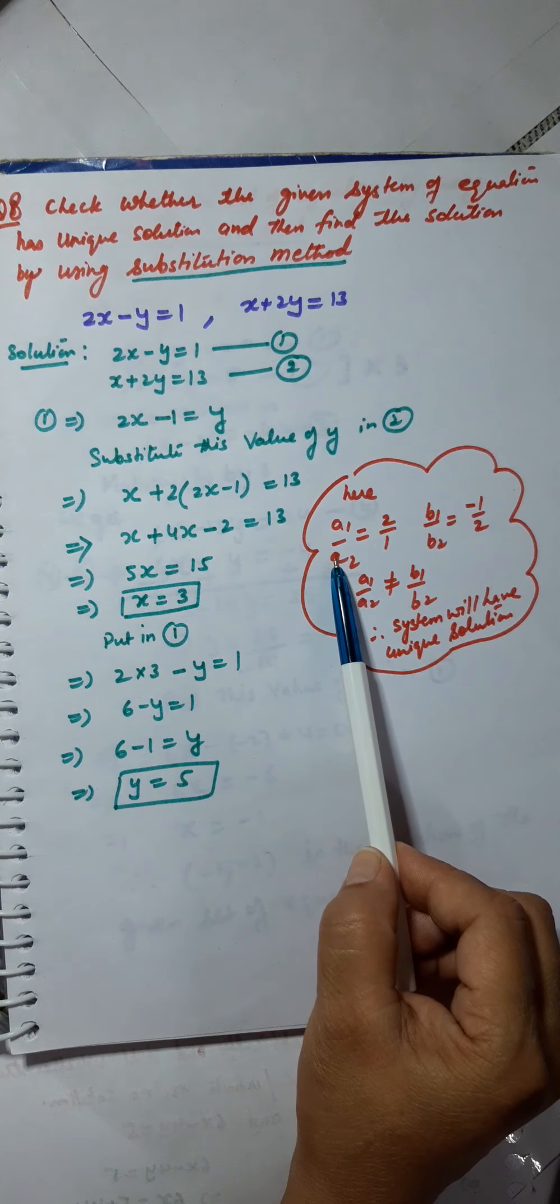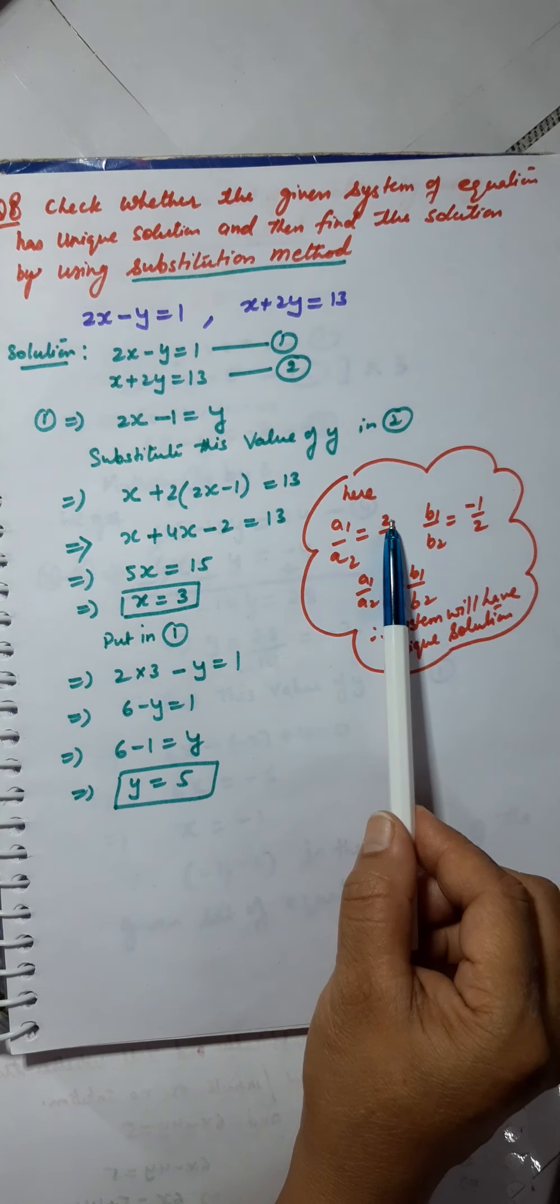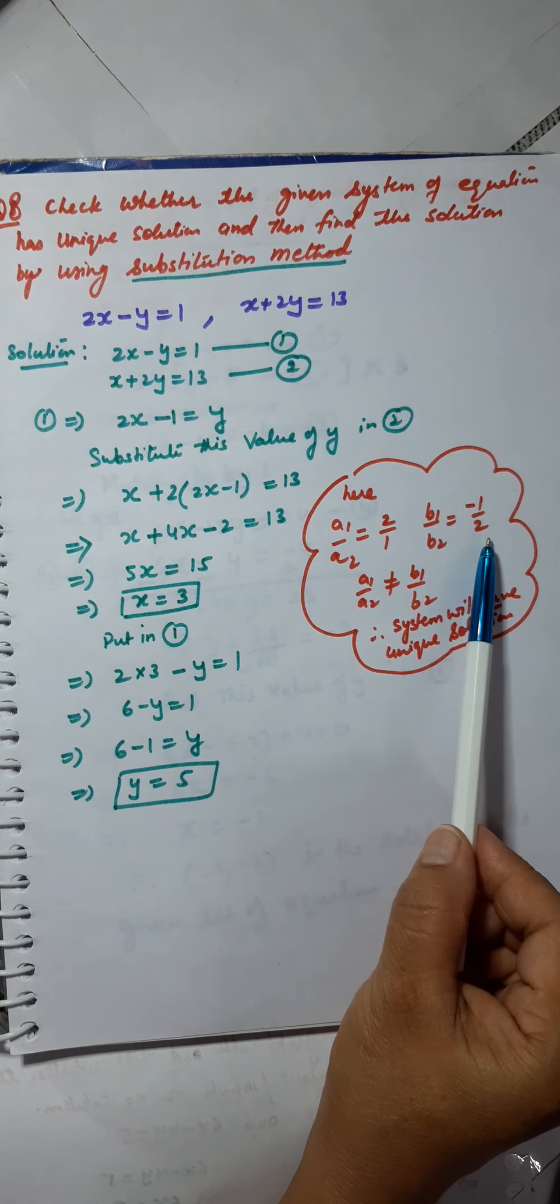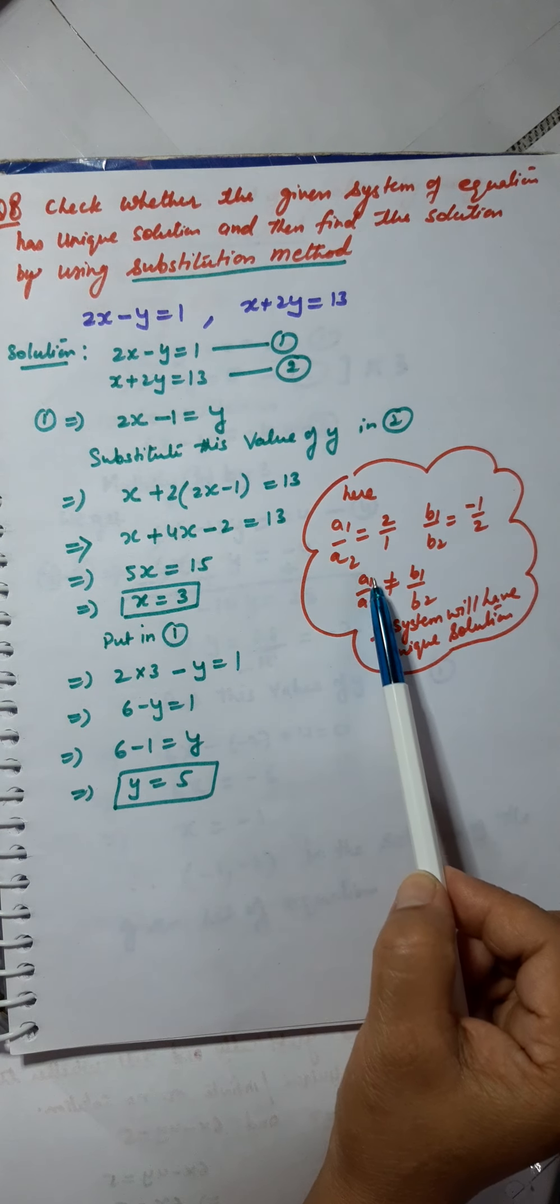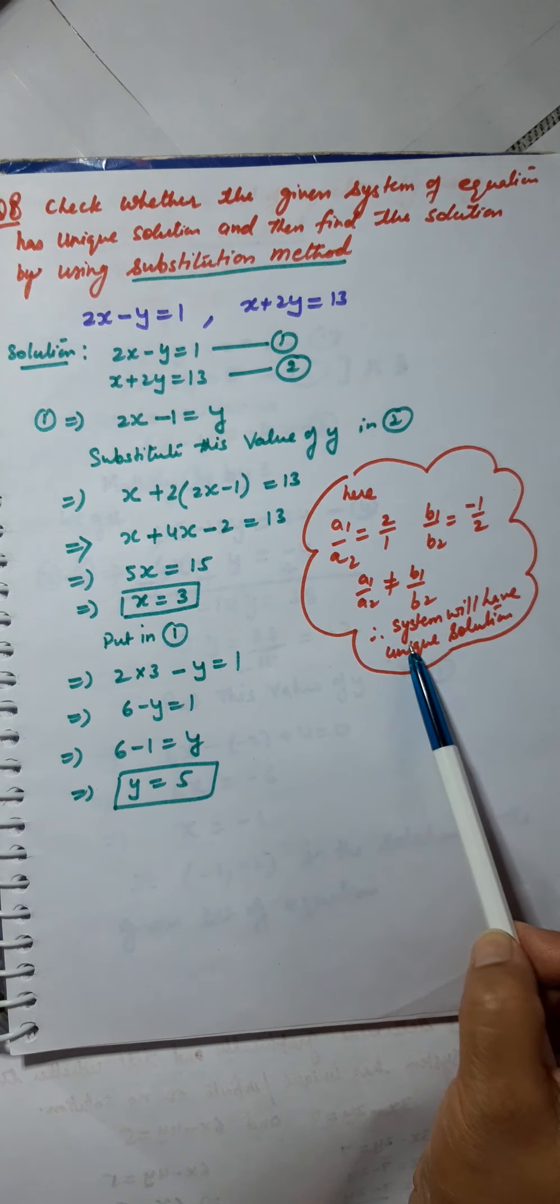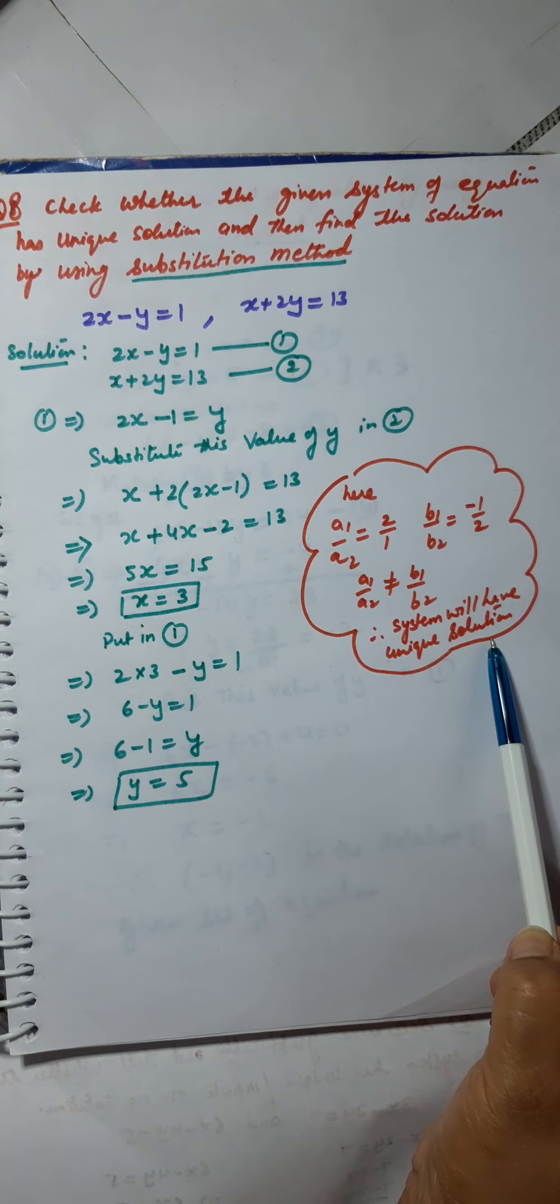Here, a1 upon a2 equals 2 upon 1. b1 upon b2 equals minus 1 upon 2. That is, a1 upon a2 is not equal to b1 upon b2. Therefore, the system will have unique solution.